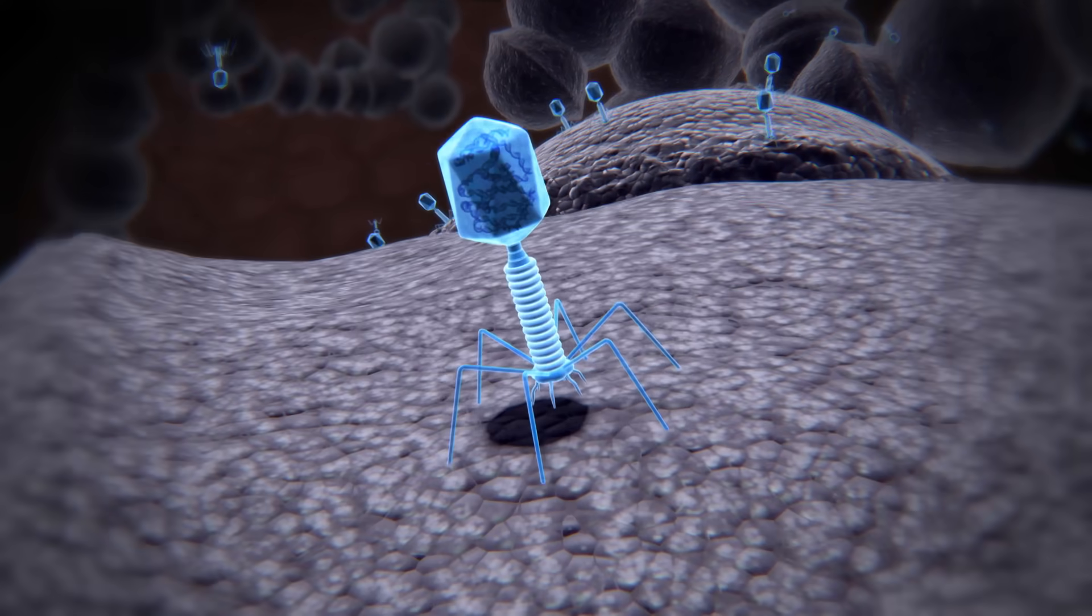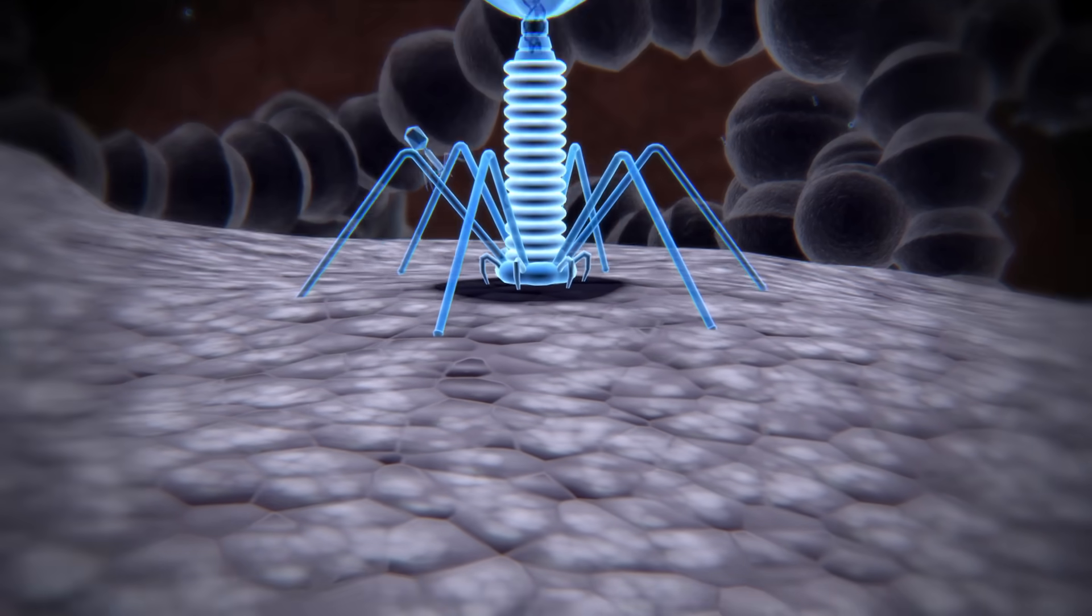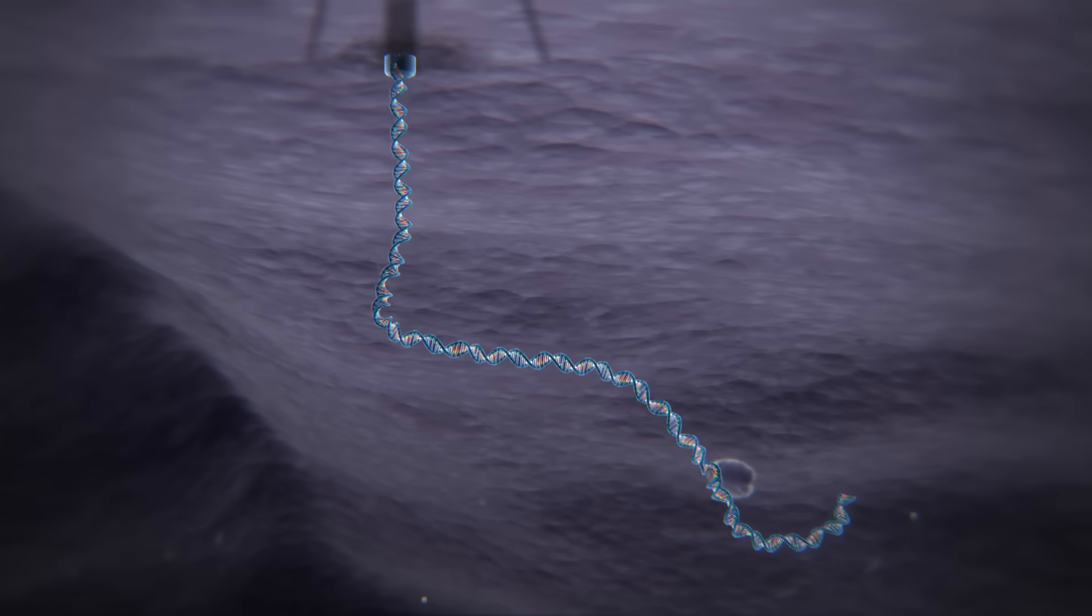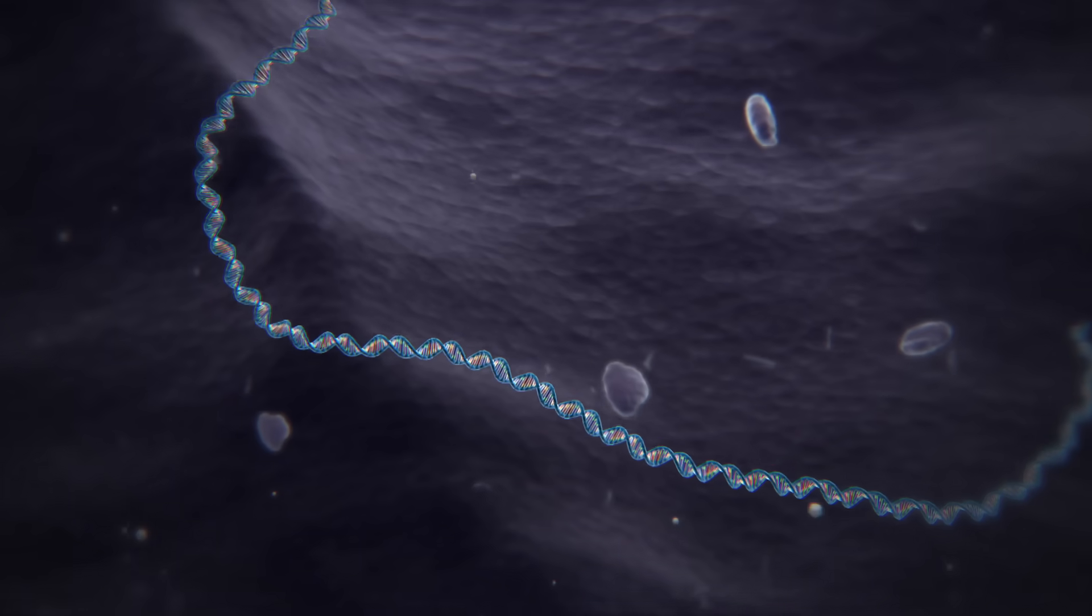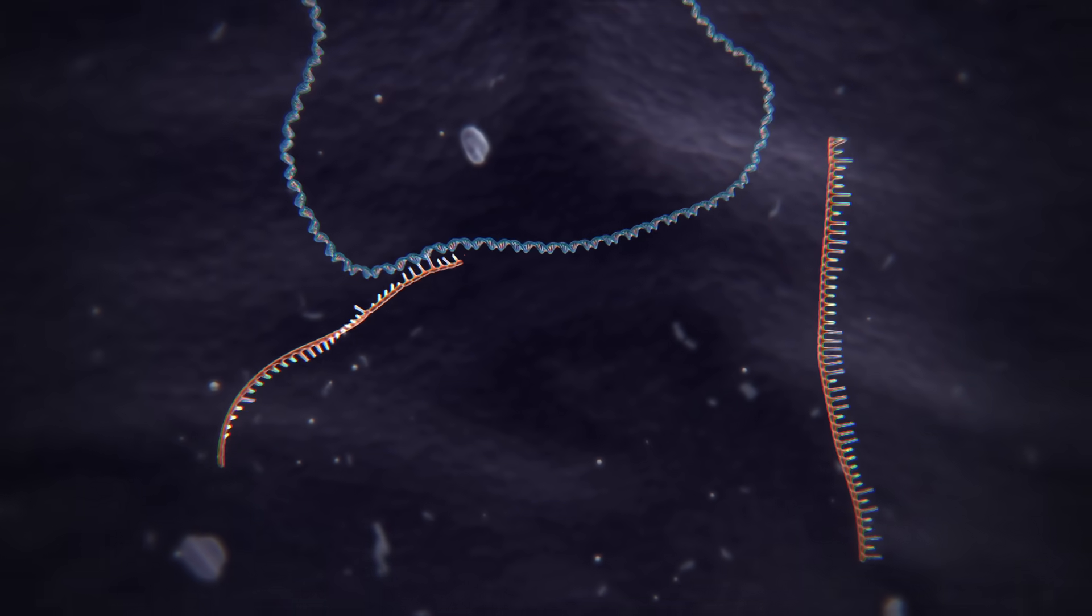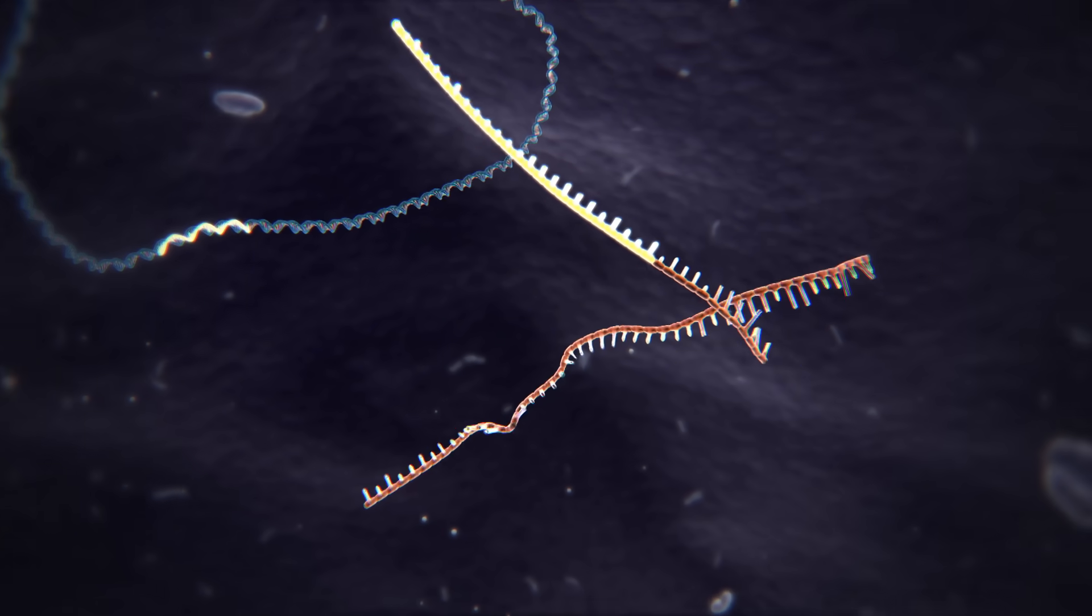The CRISPR method is based on a natural system used by bacteria to protect themselves from infection by viruses. When the bacterium detects the presence of virus DNA, it produces two types of short RNA, one of which contains a sequence that matches that of the invading virus.